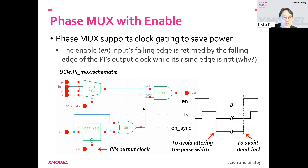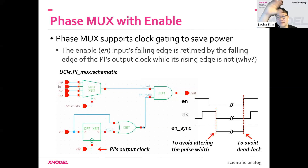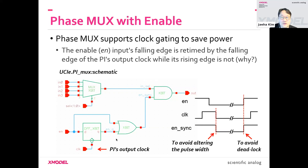When you turn off the clock, you need caution: you cannot turn it off while the clock is still high, because you'd be altering the pulse width. So you want to make sure that when you disable the clock, you do so while the output clock is in the low state. To achieve this, some re-timing logic is used.